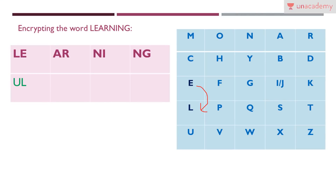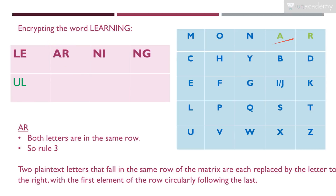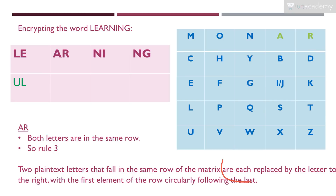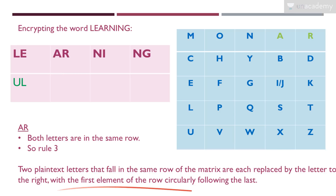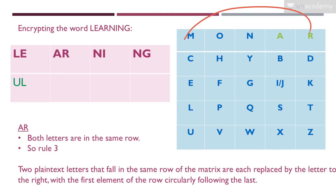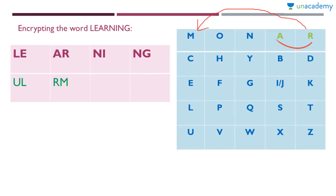Next pair: AR. A is here and R is here — on the same row. Rule: two plain text letters in the same row are each replaced by the letter to the right, with the first element of the row circularly following the last. So for A, the element to the right is R. For R, there is no element to the right, so circularly we take M (the first element of the row). So AR becomes RM.